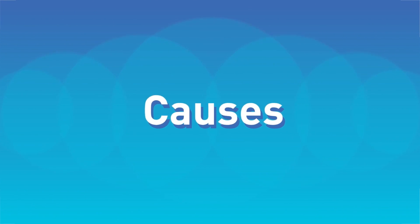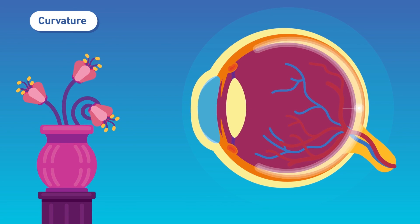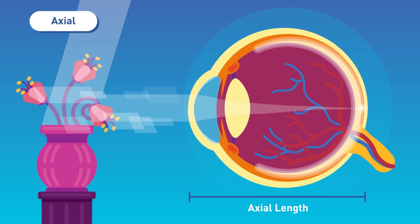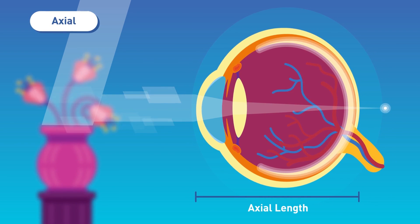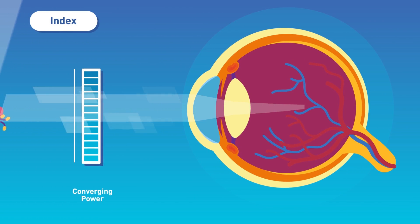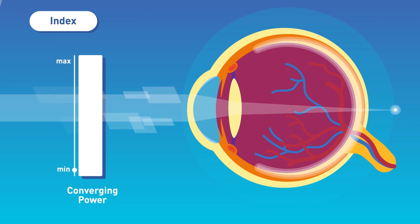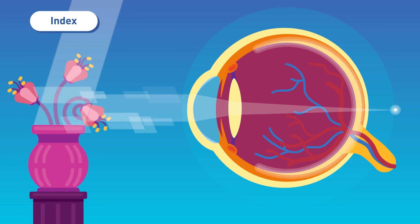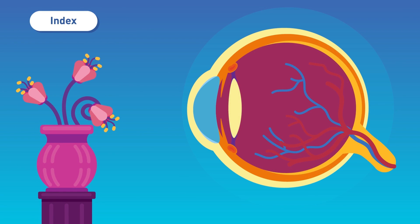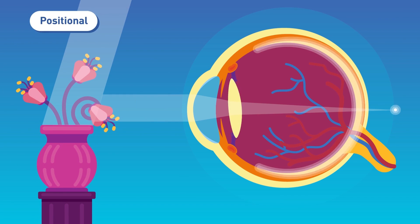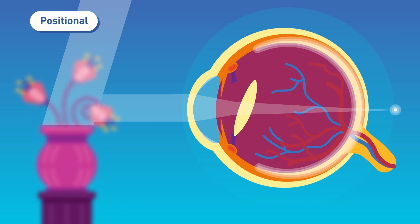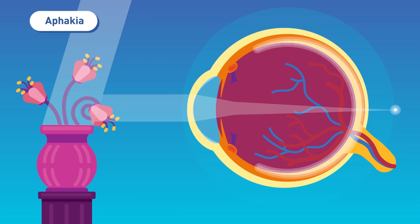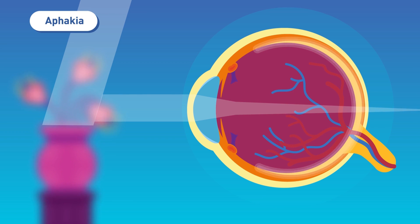Causes of hyperopia: 1. Curvature — curvature of cornea or lens is flatter than normal. 2. Axial — short axial length of eye. 3. Index — decrease in refractive index (light bending/focusing power) of the lens, e.g., in cortical cataract. 4. Positional — posterior displacement of lens, e.g., after trauma. 5. Aphakia — absence of lens in the eye; therefore the eye cannot focus light rays on the retina.